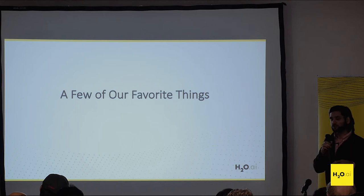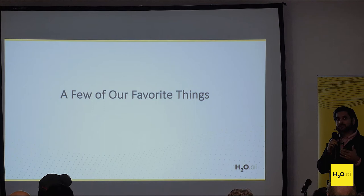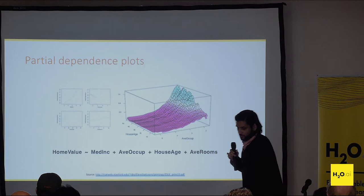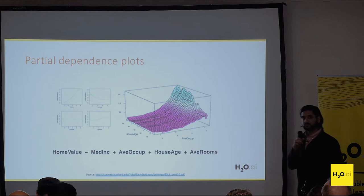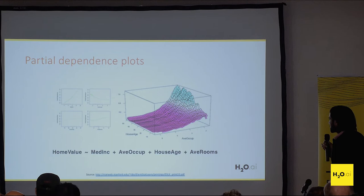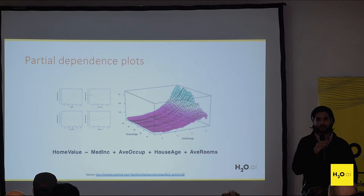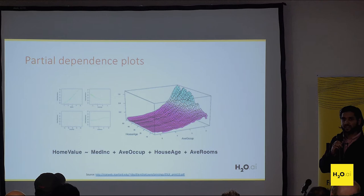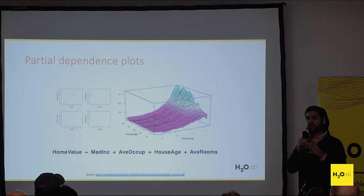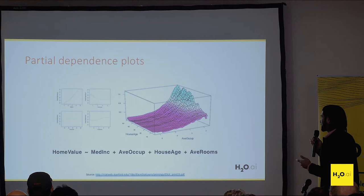Now I want to go over a few different techniques you can use for MLI — techniques to explain complex models. The first technique is called partial dependency plots. With a partial dependency plot, you have your model — let's say it's a GBM — and what it does is take one variable, vary that variable, score with that model, and then give you the average response across different values for that variable.